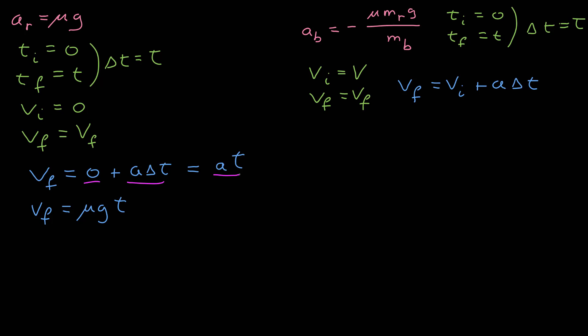Using that same kinematics equation for constant acceleration, I get the final velocity is equal to the initial velocity v, minus — substituting in for the acceleration of the blue block — times t.